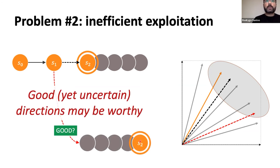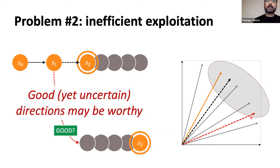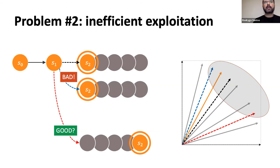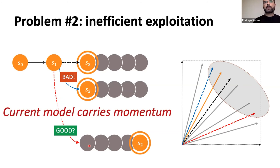The second problem we address is about the exploitation phase of CDB, where we aggregate what we learned from candidate models to update the current model. One thing we noticed was that CDB ignores directions that are apparently good ones because it doesn't trust them. We claim these might be worthy directions to pursue, particularly since we can now sample them from safer subspaces. Additionally, regardless of whether we observe bad or good directions, these are indications of how well the current model is performing, since bad and good directions are sampled in the vicinity of the current model — so there's valuable momentum information to exploit.